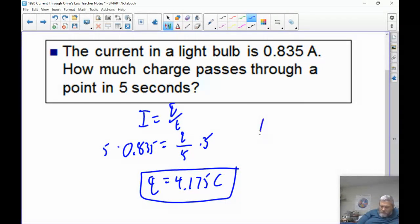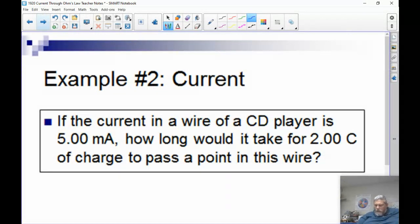A lot of times it's easier to start with just Q equals I times T. That doesn't tell us quite as much, but it becomes handy, particularly in the second problem.